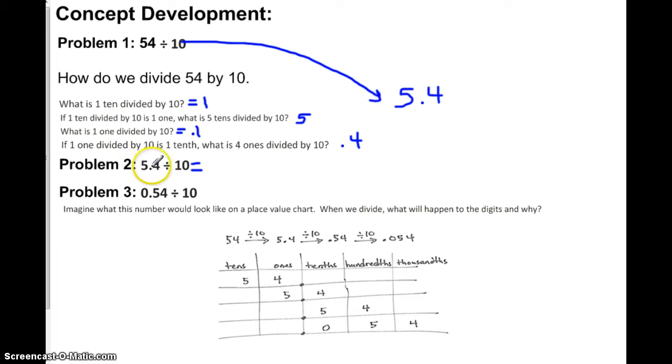So now we have 5 and 4 tenths and we're dividing that by 10. Well, if you look down here on this very beautiful place value chart, we have 5 and 4 tenths divided by 10. So that would become 54 hundredths. And then if we did this one, 54 hundredths divided by 10, it would become 54 thousandths. And here's the place value chart that shows that this theory or the answers I'm writing for you are correct. So we started out with 54. That means it's 5 tens and 4 ones. We divided it by 10. We got 5 ones and 4 tenths. We divided that by 10. We ended up with 5 tenths and 4 hundredths. Then we divided that by 10. And we ended up with 0 tenths, 5 hundredths, and 4 thousandths.